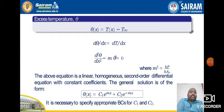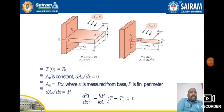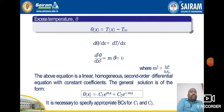What equation have we got? This is a non-homogeneous second-order differential equation: d²T/dX² − (HP/KA)·(T − T∞) = 0. To get the general solution, we substitute θ(X) = T(X) − T∞. Then dθ/dX = dT/dX, and the equation becomes: d²θ/dX² − m²·θ = 0, where m² = HP/KA.